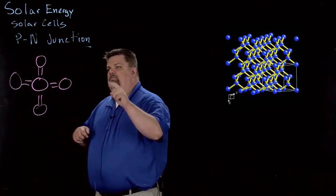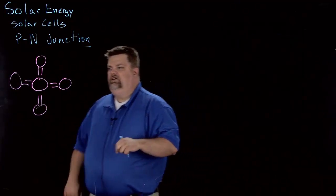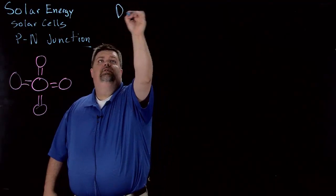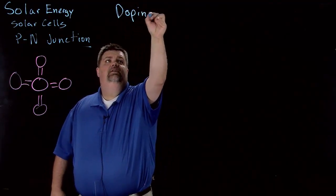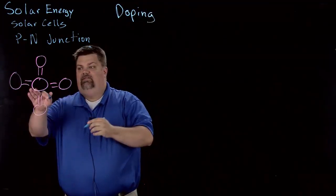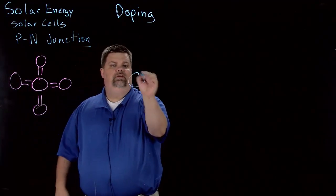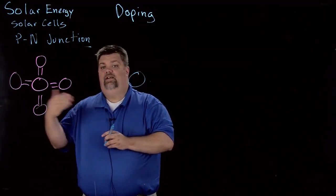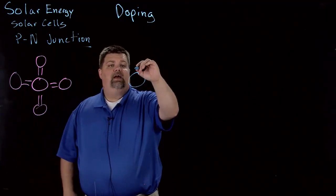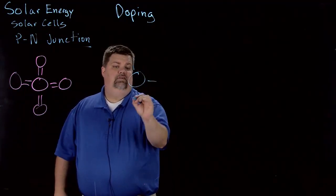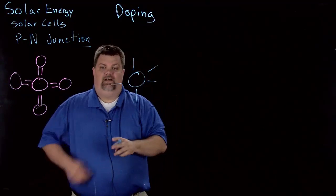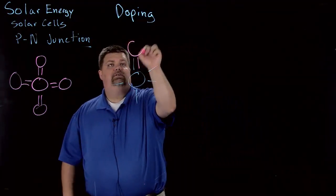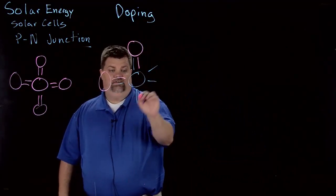What we want to do before we can create what we call a P-N junction is we need to do a thing that's called doping. Doping means that instead of having a silicon atom in the middle we might introduce another similar atom that actually has five valence electrons, and we introduce that to other silicon or semiconductors.